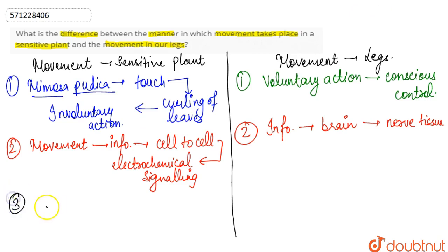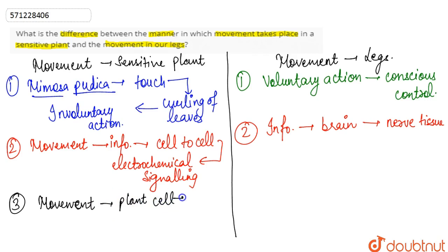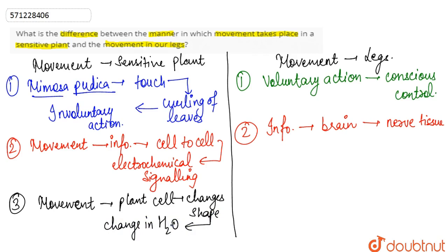The third point of difference is that in the case of the sensitive plant, the plant cell changes its shape by changing the amount of water in it. As a change in the amount of water takes place, a change in shape of the plant cell also occurs.